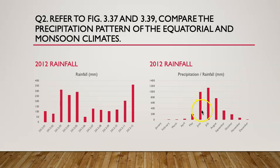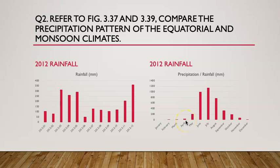There is high rainfall in June to August, followed by certain months with very low rainfall. For the first comparison, let's look at January to April: for equatorial climates there is high rainfall every month, but for monsoon, January to April is typically low rainfall — from zero in January to less than 50 mm up to April. This is the first difference.